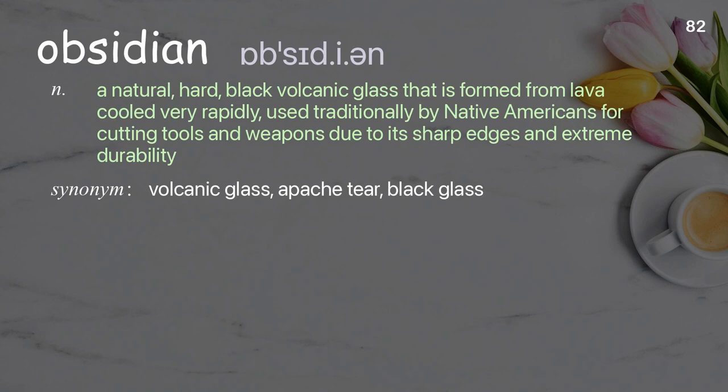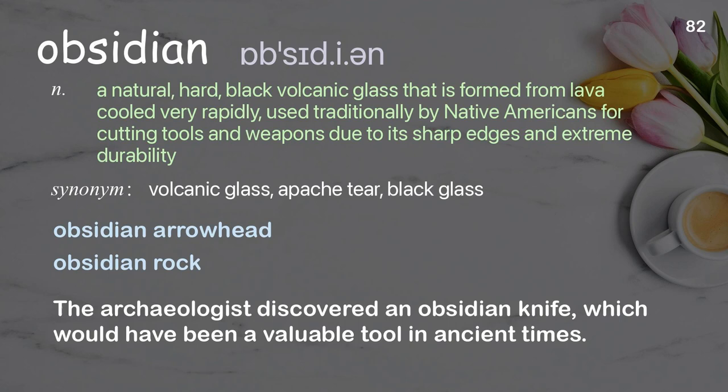Obsidian: A natural, hard, black volcanic glass that is formed from lava cooled very rapidly, used traditionally by Native Americans for cutting tools and weapons due to its sharp edges and extreme durability. Examples: obsidian arrowhead, obsidian rock. The archaeologist discovered an obsidian knife, which would have been a valuable tool in ancient times.